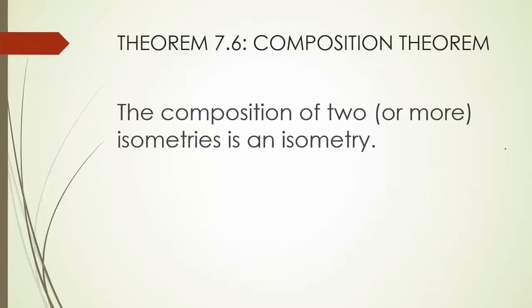Theorem 7.6, Composition Theorem: the composition of two or more isometries is an isometry. Meaning, if you do a composition involving a reflection and a rotation, or a rotation and a translation, or a translation and a reflection, because each one of these are isometries, together they're also going to be an isometry.